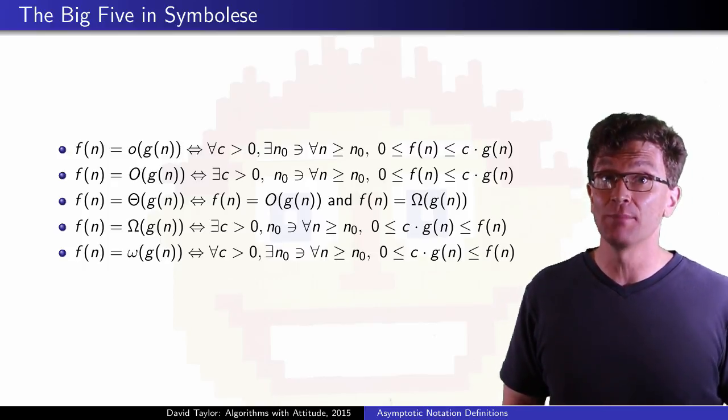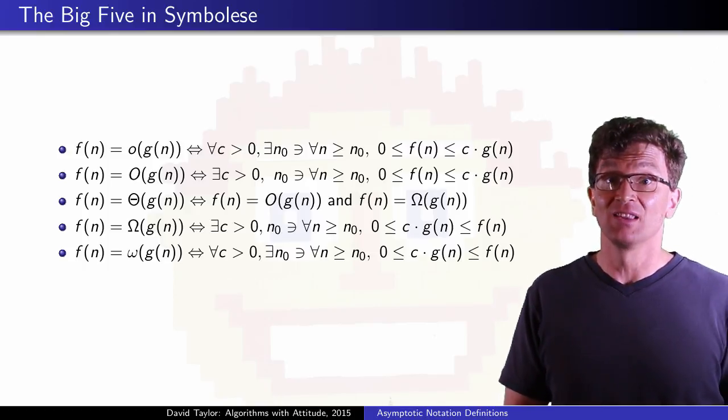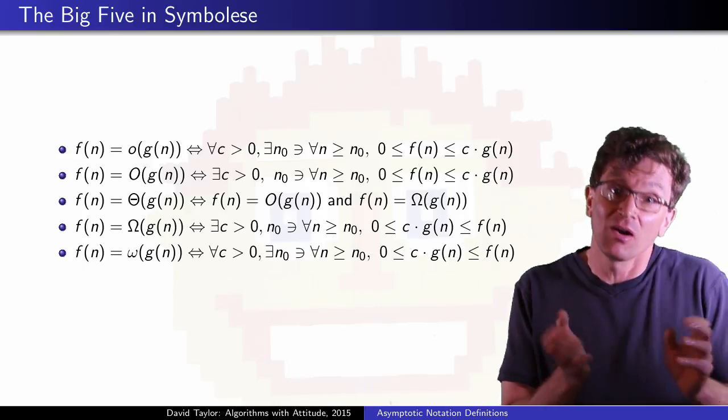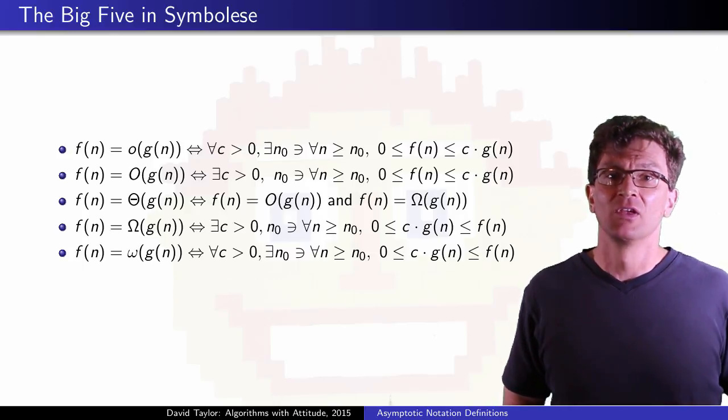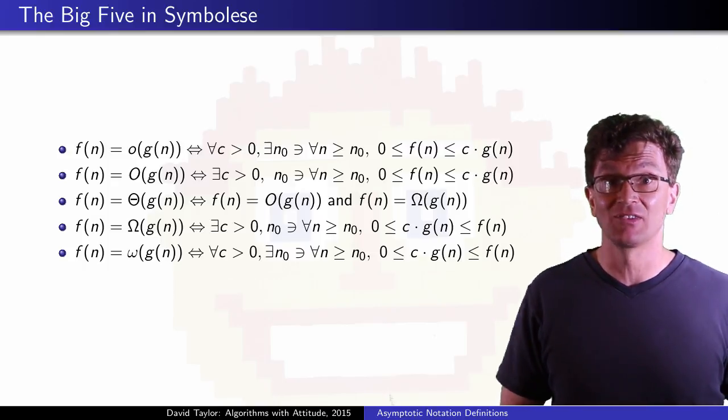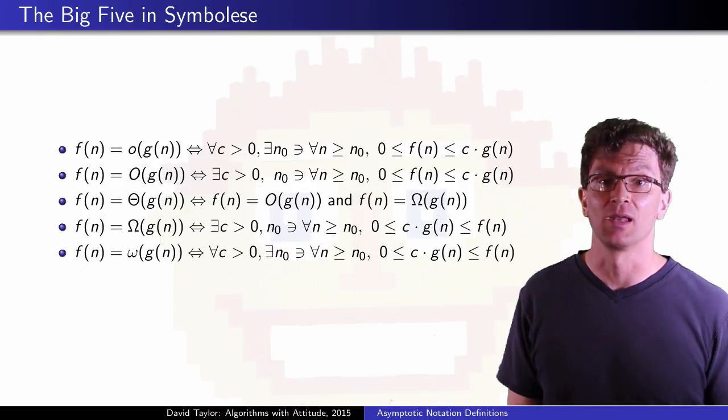My definitions are slight modifications on those given in Cormen, but they actually define the same sets as Cormen, even if my definitions themselves are slightly altered. For instance, in Cormen for little o, they use f(n) strictly less than c·g(n), where I use less than or equal to, it will still define the same set.